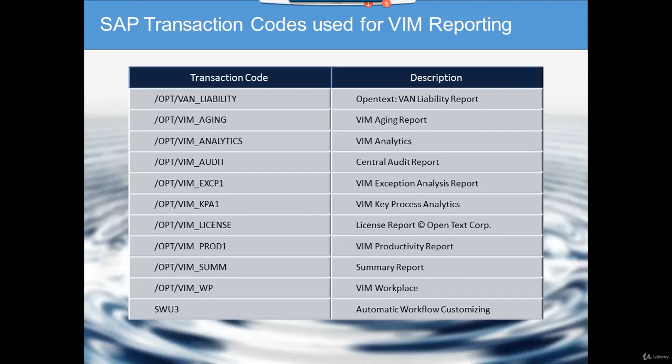The last part, which is very important, is SW3. This is a transaction code delivered in standard SAP. OpenText Vendor Invoice Management works only with workflows, so all reporting is based on workflow instances. For SAP OpenText VIM to work properly, SW3 needs to be configured properly. That covers all the frequently used transaction codes for VIM reporting.